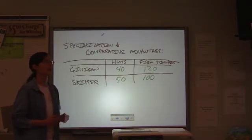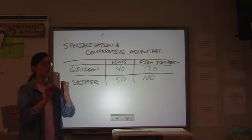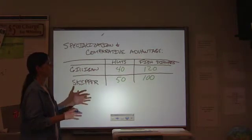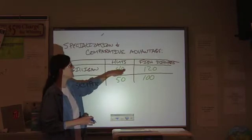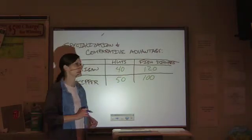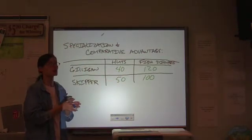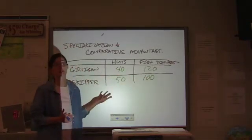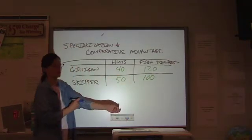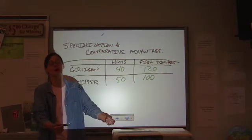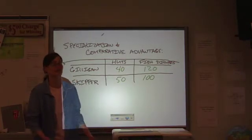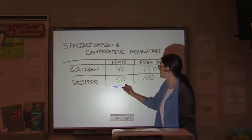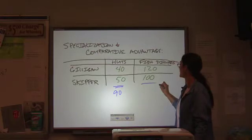So the idea is that if we do not specialize, if Gilligan divides all of his time up between making huts and catching fish dinners, and the skipper divides all of his time up between making huts and catching fish dinners, this is our total output, considering, of course, that he's going to make Gilligan work a lot longer, and Gilligan is also less efficient. So what do we have right now? We have totals of 90 and 220.